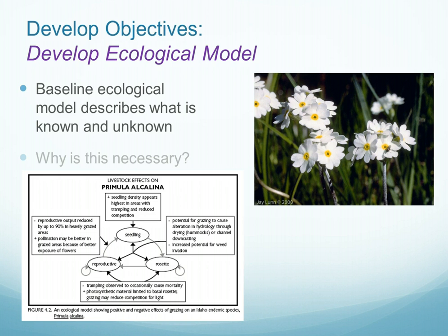The first is to develop an ecological model. An ecological model gives us a baseline of information about what is known and what is unknown. If there is a critical piece of information that is missing in terms of our understanding of the way the system works or the way the population reproduces, this can identify a bottleneck in our understanding, and this is important to know as we proceed with the planning process.